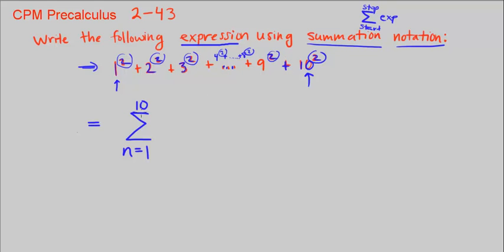Adding in between is just the sigma. So what is my expression that I'm adding? I'm just going to be adding whatever it is squared. And what is that whatever? It's N.